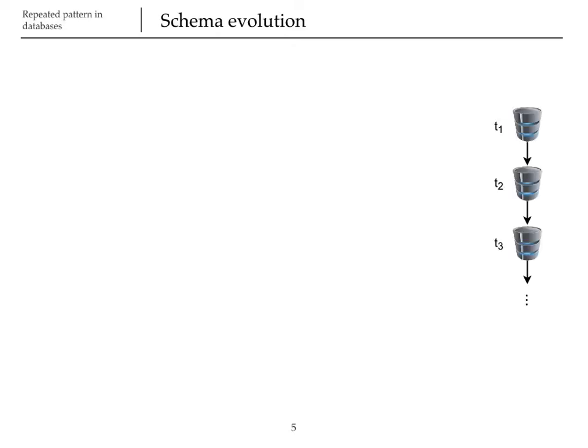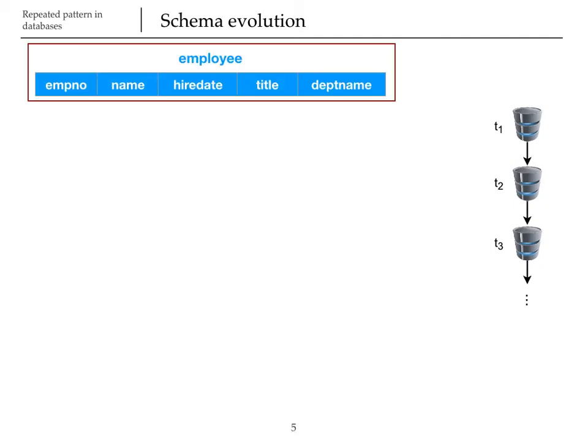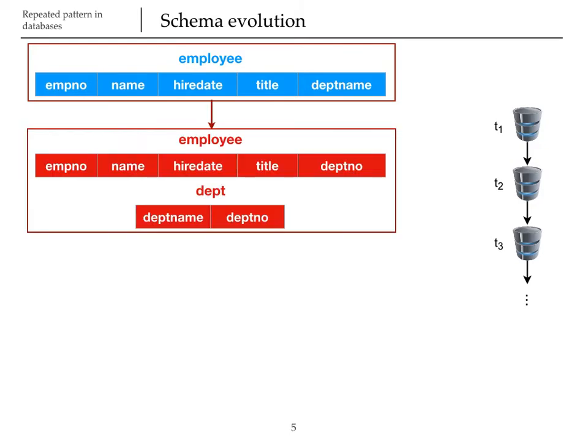The first instance is when the schema of a database evolves over time. This problem is unavoidable and it usually happens because of changes of business requirements. Consider our running example. It could start with a simple database that only has one relation called employee. As time goes on and the company establishes more departments, we normalize the database and add another relation called dept and swap the deptname attribute in the employee relation for deptno.